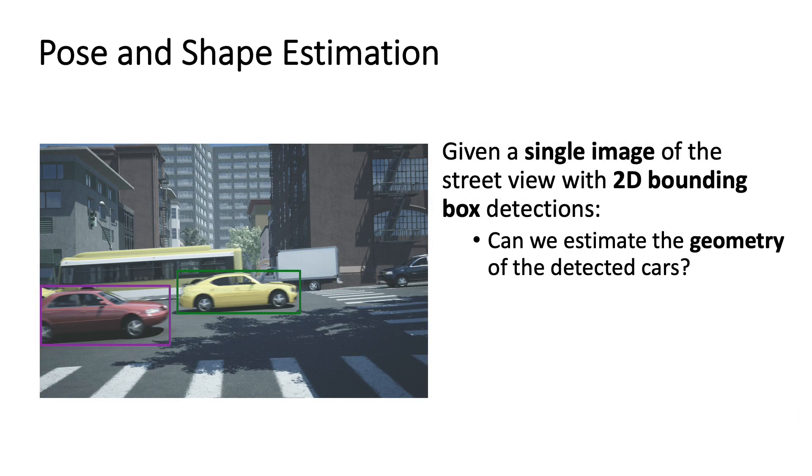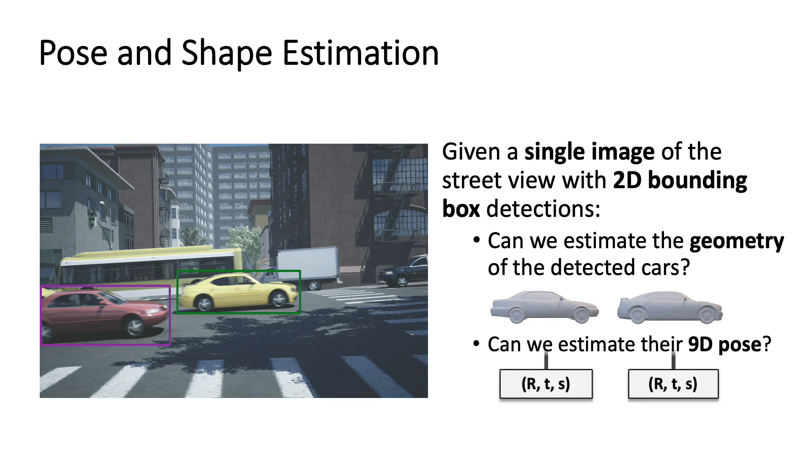First, can we estimate the geometry of the detected cars? And second, can we estimate their 9D pose consisting of rotation, translation and scale?